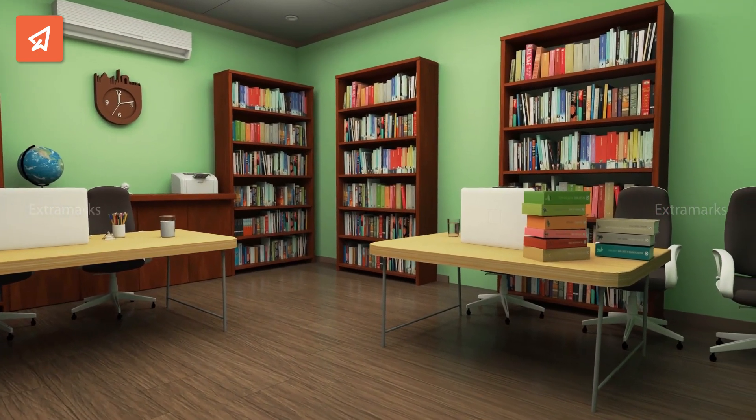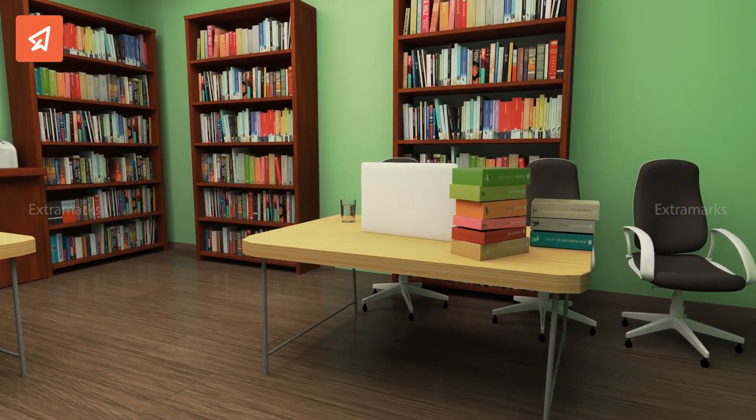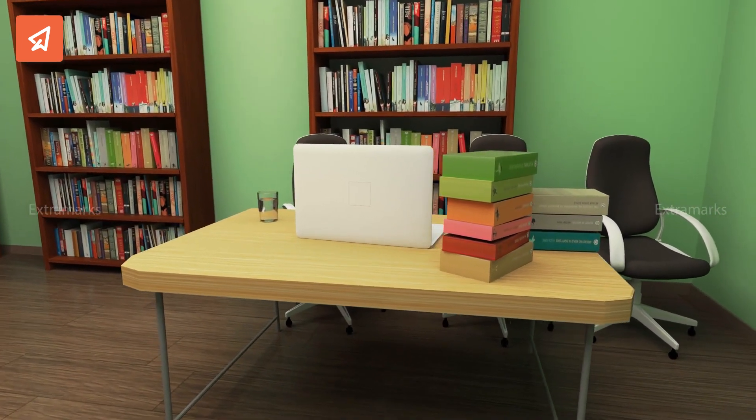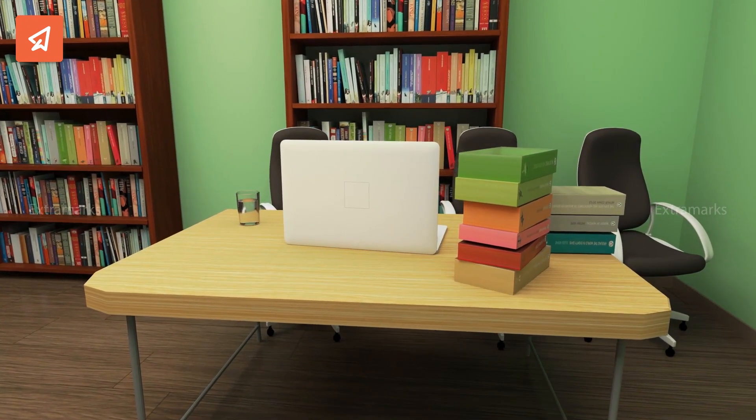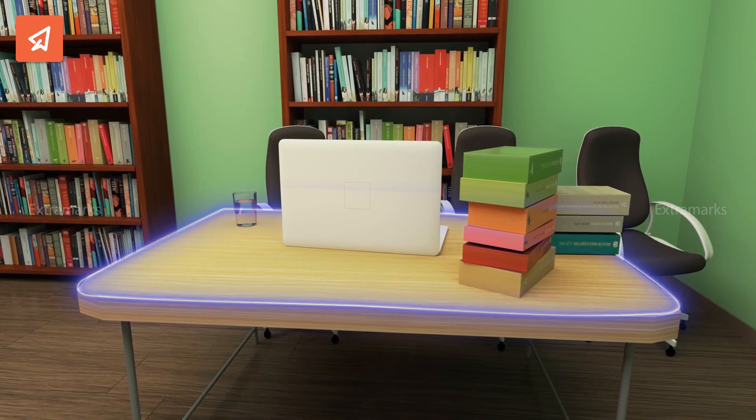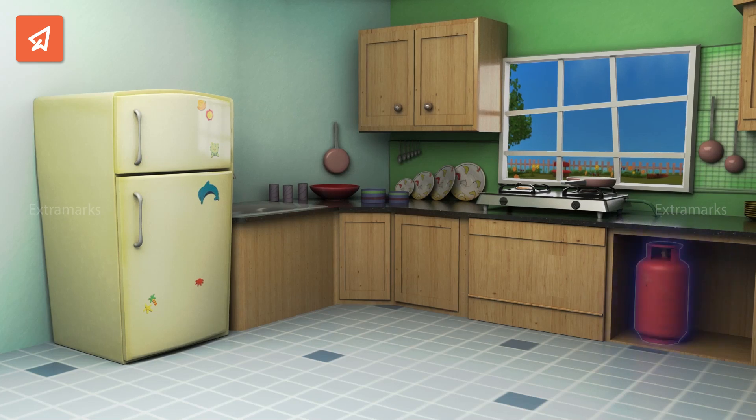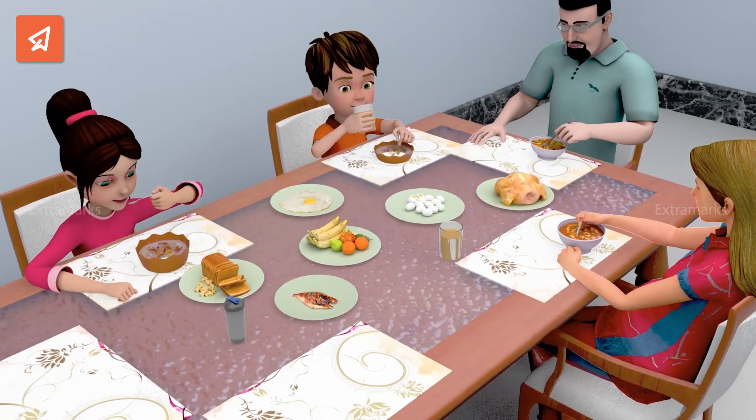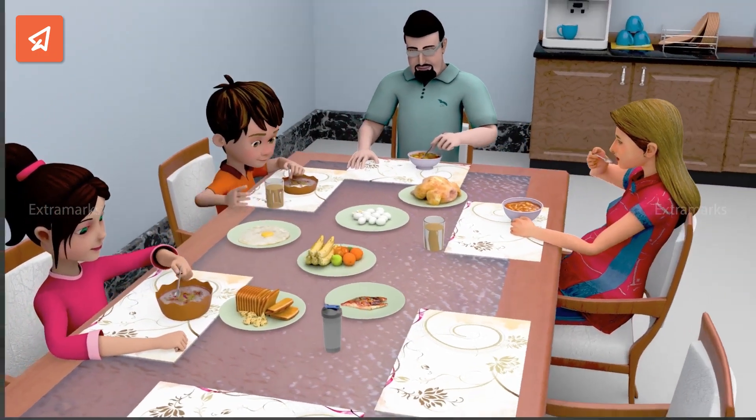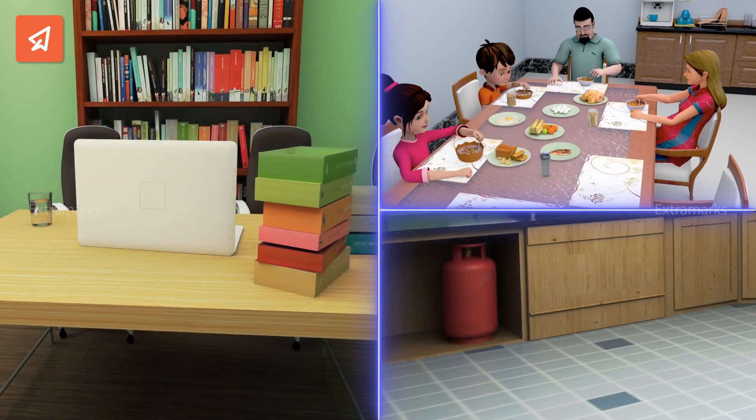In our daily lives, we come across a large variety of things that differ in shapes, sizes, and compositions. For example, a table we use to study, the water we drink, a gas cylinder we use for cooking food, and the food that we eat. All these different things are called matter.